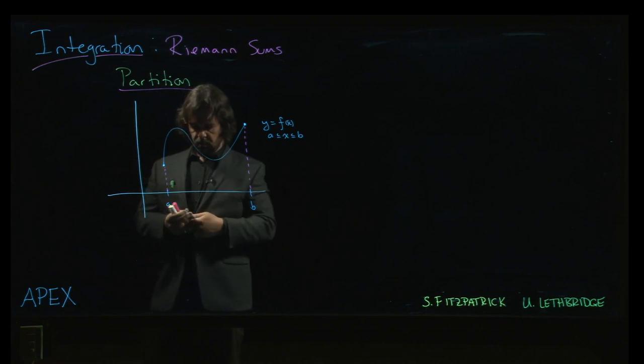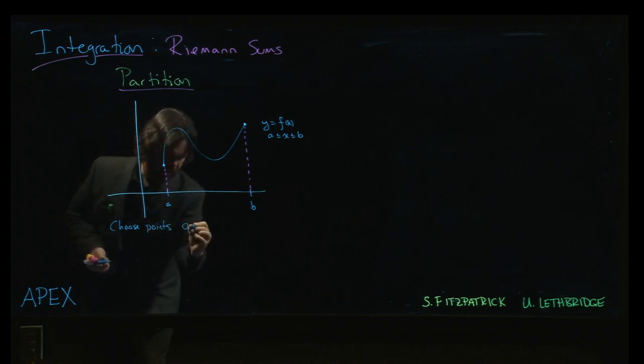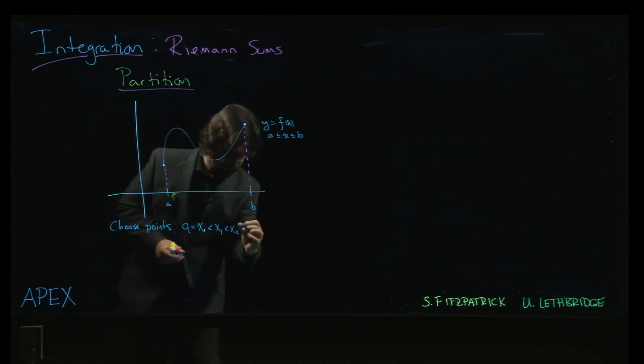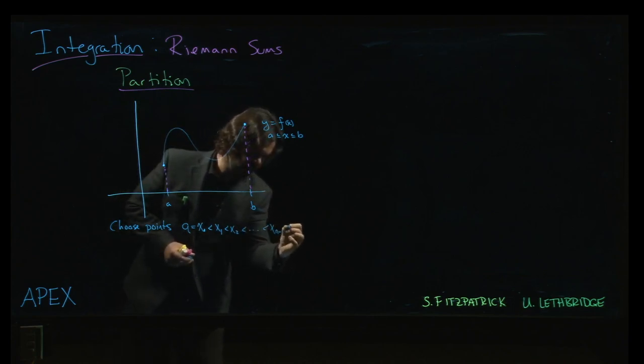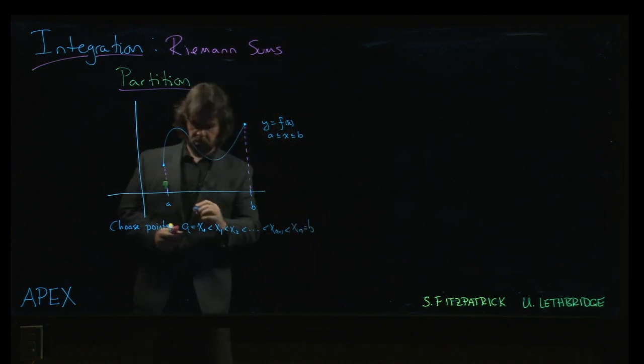So in a partition what we do is we choose points. We always take a to be our initial point x0, which will be less than some next point x1, which will be less than some next point x2, and so on, down to xn minus 1, and then finally an xn, which will be b.